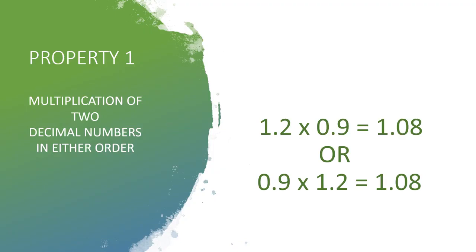Let us study Properties of Multiplication of Decimal Numbers. First property: Multiplication of two decimal numbers in either order. For example, 1.2 x 0.9. Do the multiplication. 12 lines are 108. Then put the decimal. So the answer is 1.08.